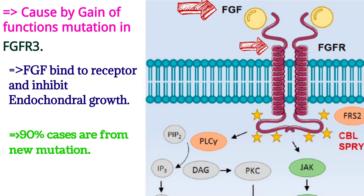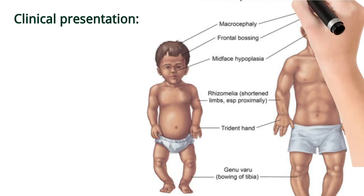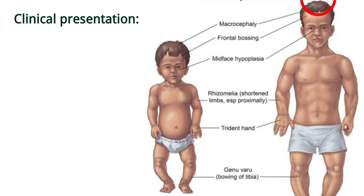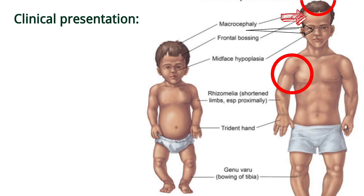Here you can see the picture of the FGFR and FGF. The clinical presentations of Achondroplasia include an abnormally large head, frontal bossing or prominent forehead, depression of the root of the nose, shortening of the proximal parts of the limbs, and bowing of the tibia.